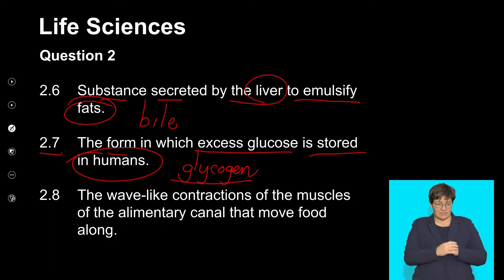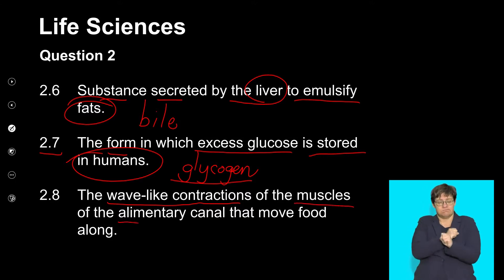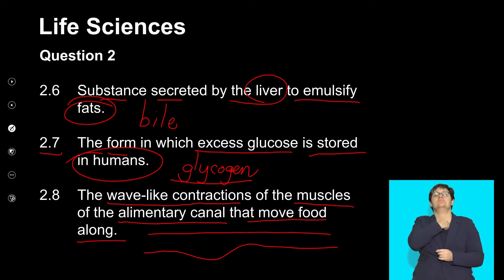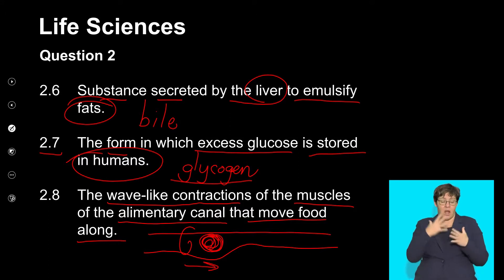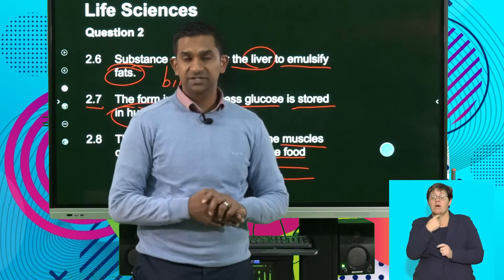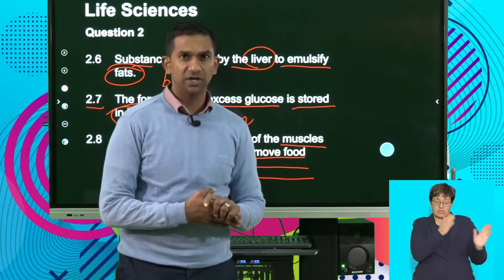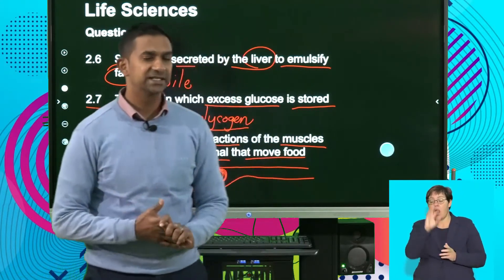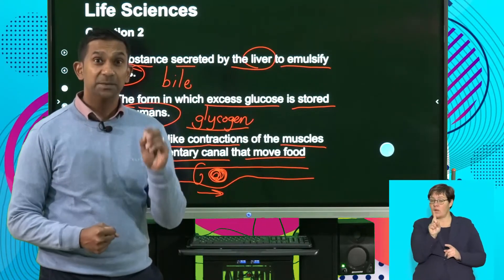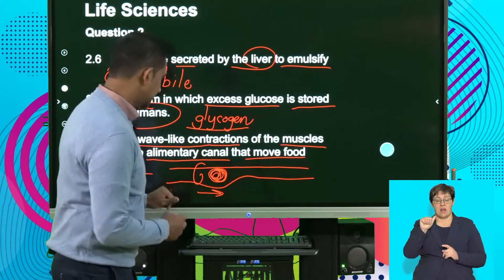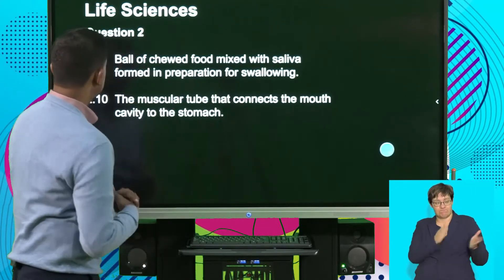2.8: The wave-like contractions of the muscles of the alimentary canal that move food along. Remember that we spoke about the muscular contractions that allow for the propulsion of the bolus. That muscular contraction refers to the term fundamental to moving food along the digestive system — peristalsis. Peristalsis is what propels food along the digestive system.